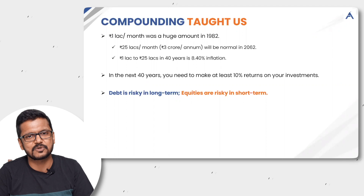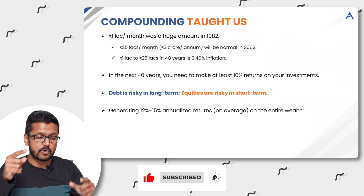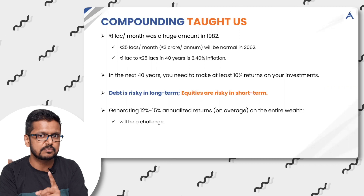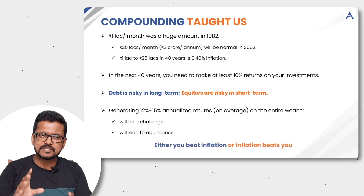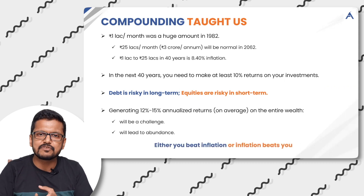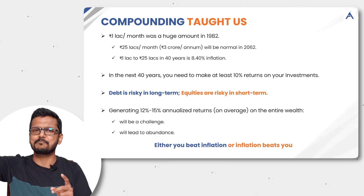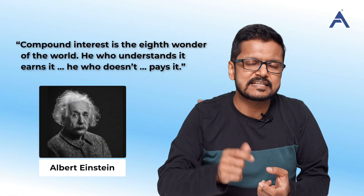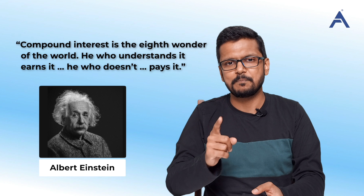And that's when the results are not there. Generating 12 to 15% annualized returns on average on the entire wealth is a challenge. But if you beat that challenge, it will lead to abundance. The only option is: either you beat inflation or the inflation beats you. Compounding works both ways — either you go up in a compounding manner or you erode your wealth in a compounded manner. As Albert Einstein said: compound interest is the eighth wonder of the world. Those who understand earn it. Those who don't pay it.